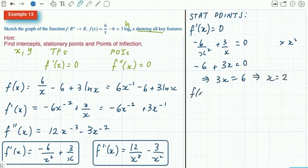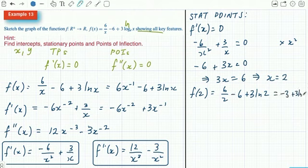If I put x = 2 back into the original function, you'll get 6/2 - 6 + 3ln(2), which is -3 + 3ln(2). So we have a turning point at x = 2 and y = -3 + 3ln(2).